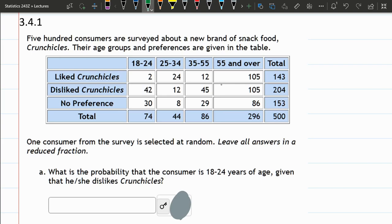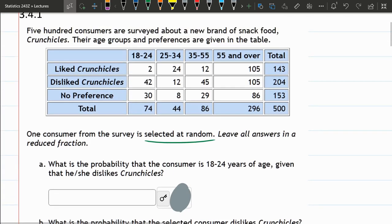One consumer is selected at random, so we have no idea what their age is or their preference. What's the probability that the consumer is 18 to 24 years of age, given that he or she already dislikes Crunchies? So we're narrowing it down. They already dislike Crunchies, so we're definitely in this row right here. So from this row, it was already given. So now what's the probability that they're 18 to 24?